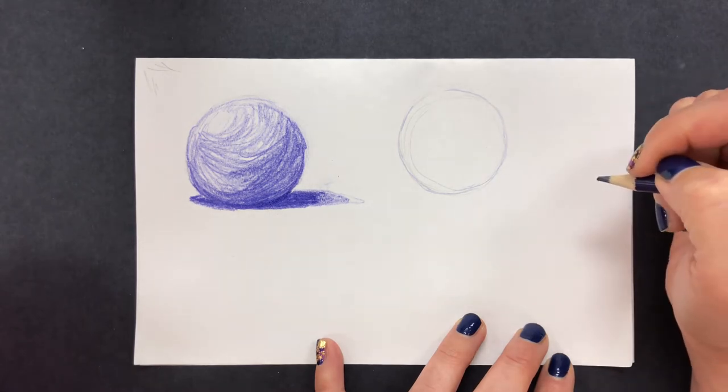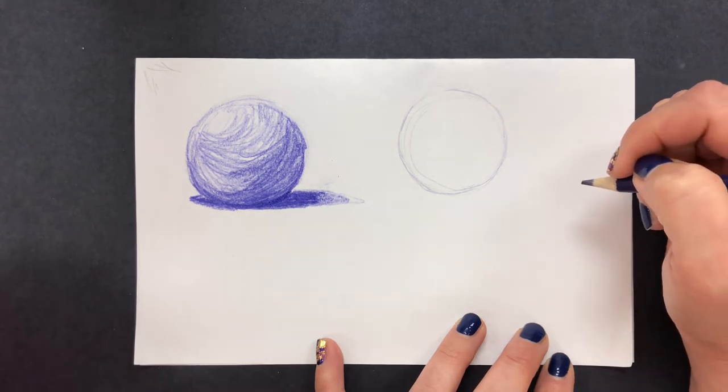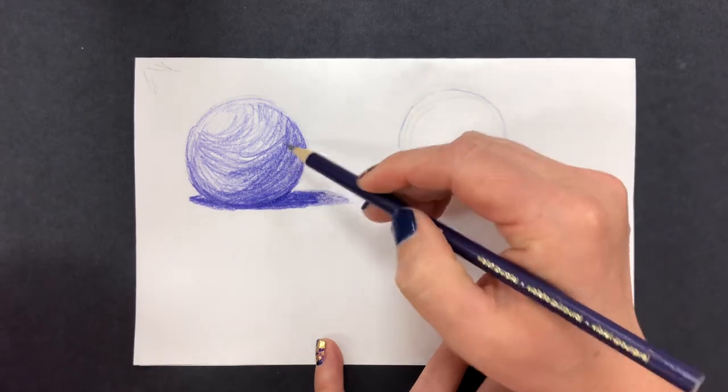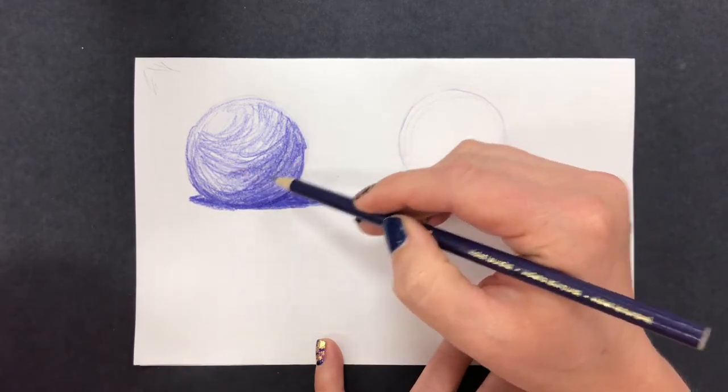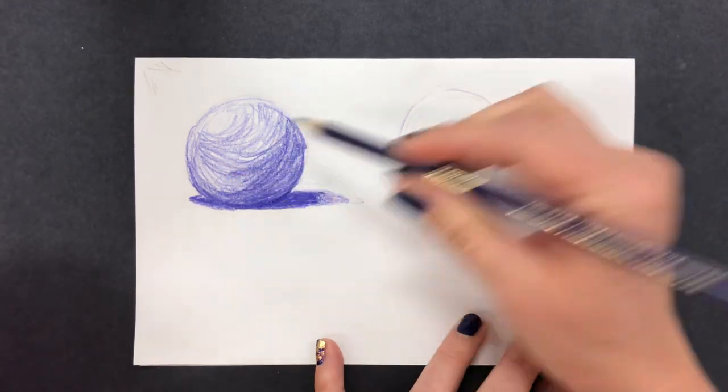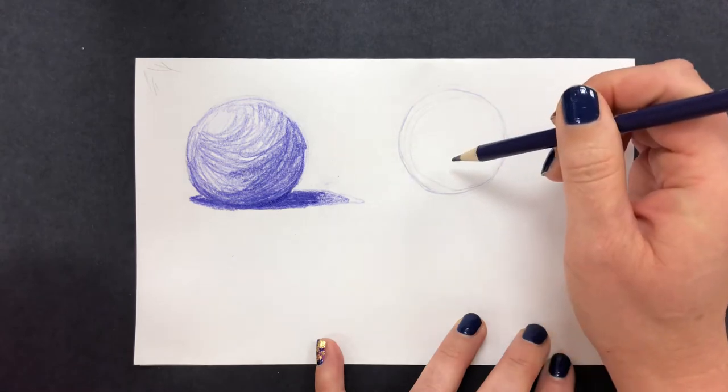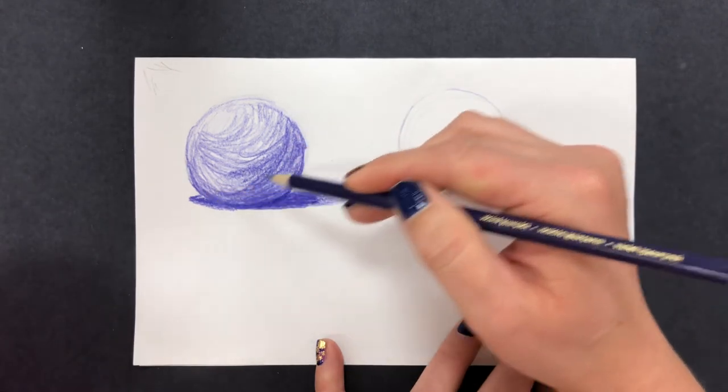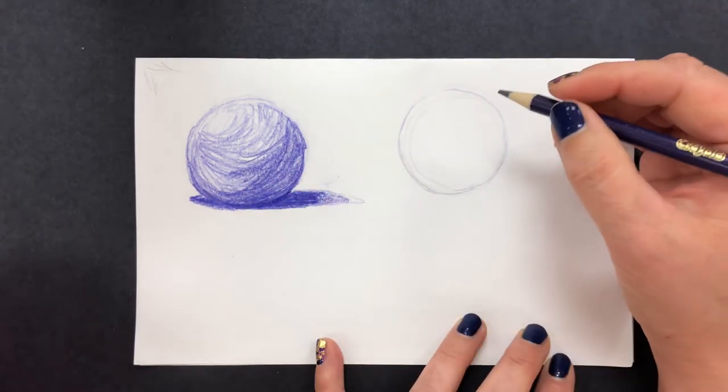I also want to consider the shape of a sphere. So the way that I'm shading it is needing to match the shape of the object because straight lines across this are going to look very flat but a curved line is going to create that illusion that it is three-dimensional.